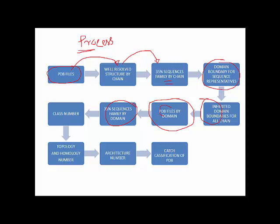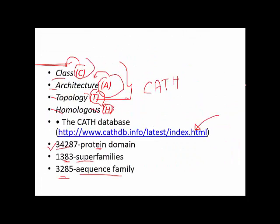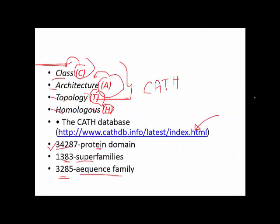After grouping into a single family, the family is given a class number and name. Then topology and homology similarity are observed, and based on that, an architecture number is assigned. So starting from the PDB file, similarity with other proteins is checked, and proteins are classified. One domain is compared with other domains — if similarity is found they are grouped into a family domain — then class classification, topology, and homological classification are done. In short, classification is done at four levels: C-level, A-level, T-level, and H-level.